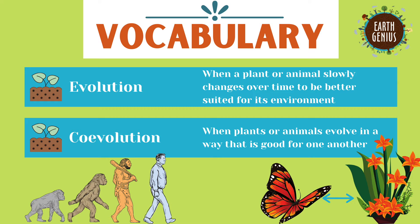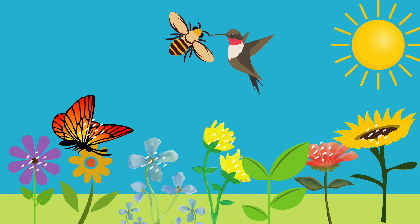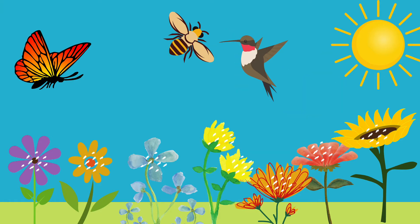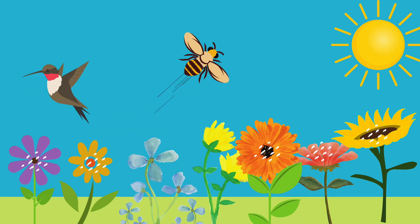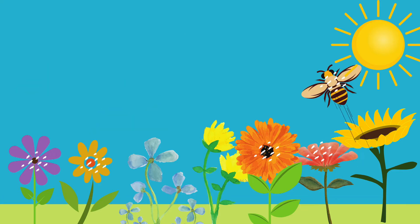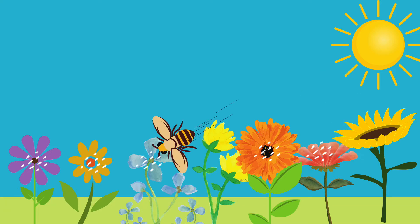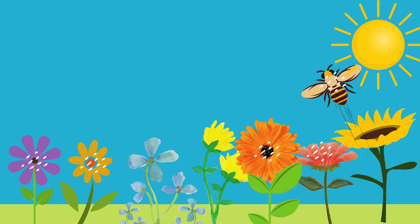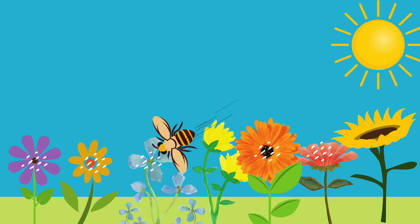When two different species evolve together, that can be called co-evolution. Normally, this happens to the benefit of both species. Many flowers and pollinators co-evolved together, and now they can't survive without each other. The flowers rely on specific pollinators to help them with their reproduction, and without the pollinators they couldn't make their seeds and reproduce. The pollinators couldn't survive without the flowers because that's the only food source they're adapted to eat.